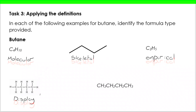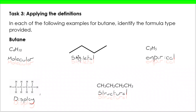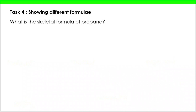That leaves us with the structural formula. It's not showing all of the bonds, but I can see very clearly that this carbon has three hydrogens, it's bonded to a carbon with two hydrogens, to a carbon with two hydrogens, to a carbon with three hydrogens. So I've got butane illustrating perfectly each of the five different formula types. Now let's try some questions on this.